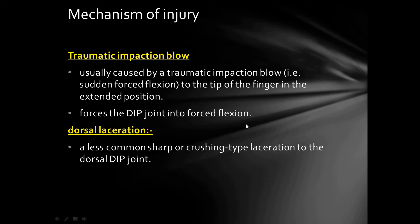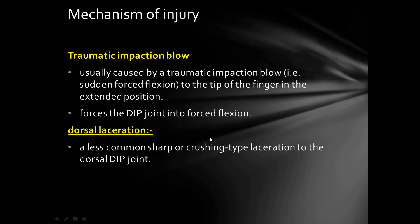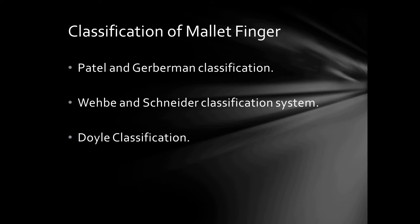Mallet finger is caused by a traumatic impaction blow to the tip of the finger in an extended position, which forces the distal interphalangeal joint into forced flexion. This direct impaction causes either fracture of the base of the phalanx or avulsion of the tendon. Other mechanisms include sharp or cutting-type laceration to the distal interphalangeal joint area.